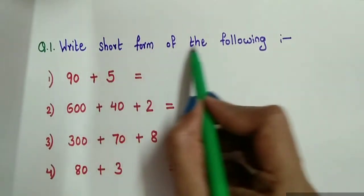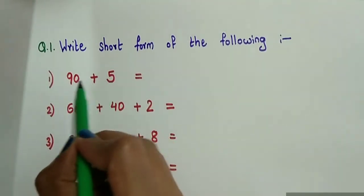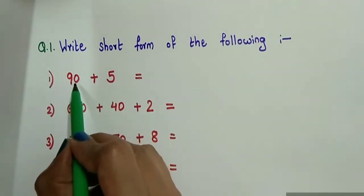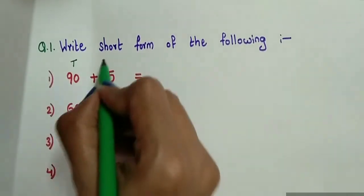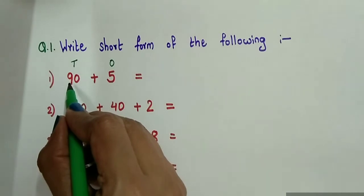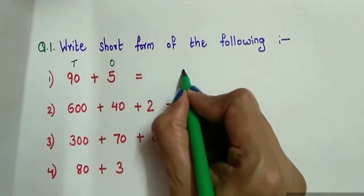First question is 90 plus 5. This zero expresses that 9 is at 10's place and 5 stands at 1's place, and the answer will come 95.